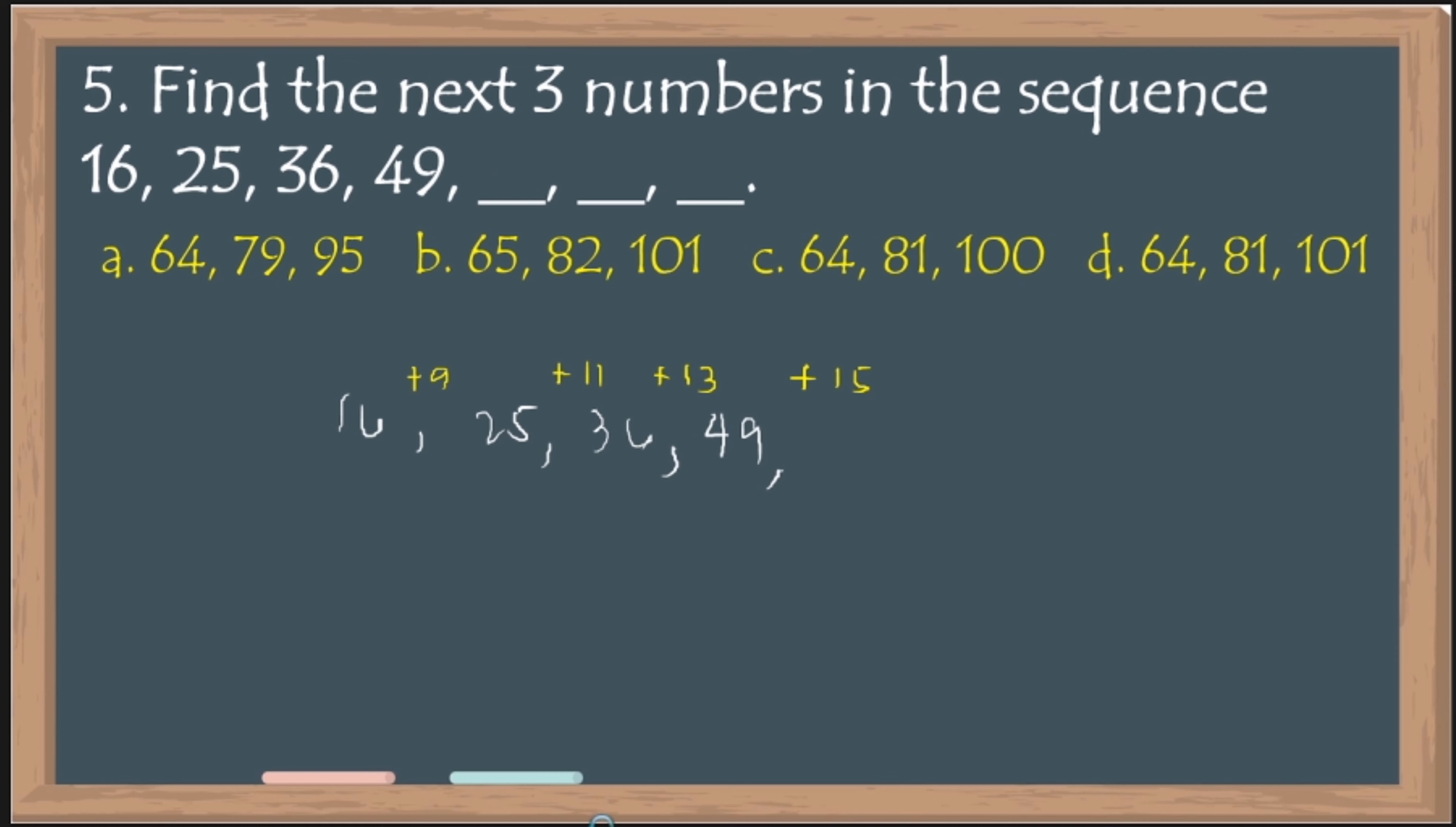What is 49 plus 15? That is 64. Then, ano ang susunod natin i-add after ng 15? 17. Nag-add lang tayo ng odd numbers. So, 64 plus 17, that's 81. Then, 81 plus next number na i-add natin ay 19. So, 81 plus 19, that is 100. So, therefore, our answer is letter C.